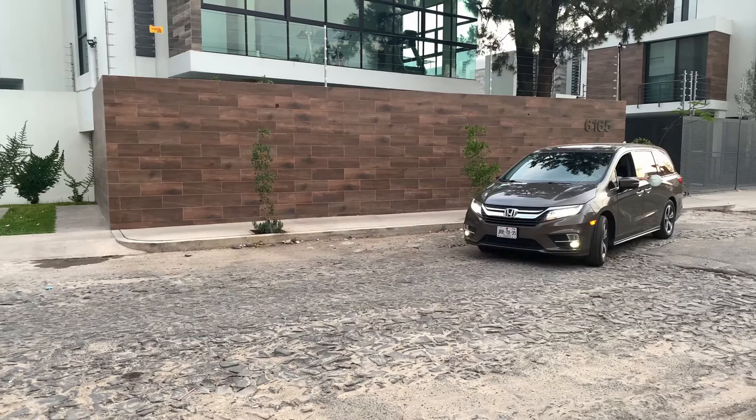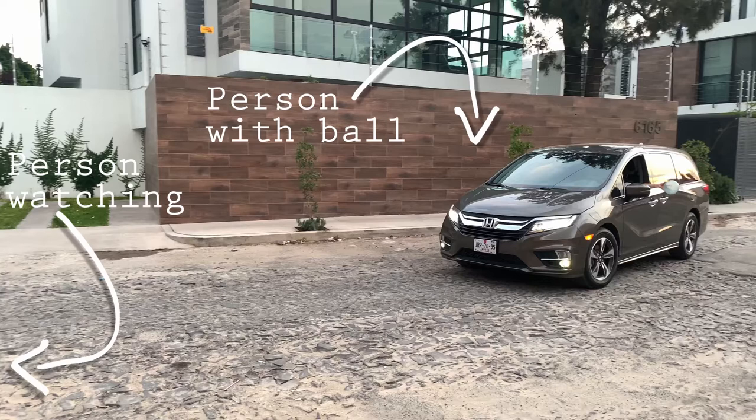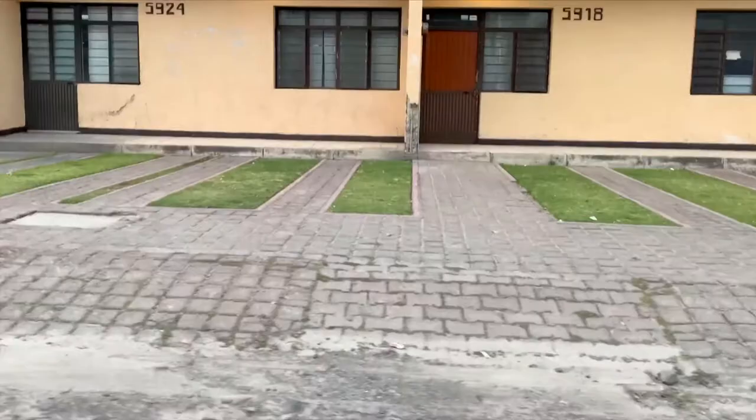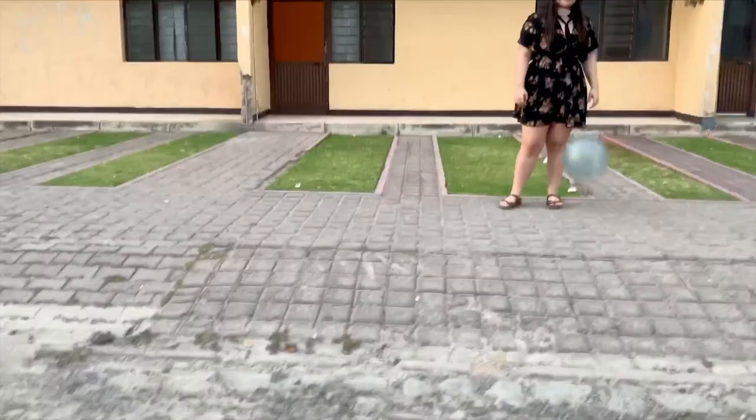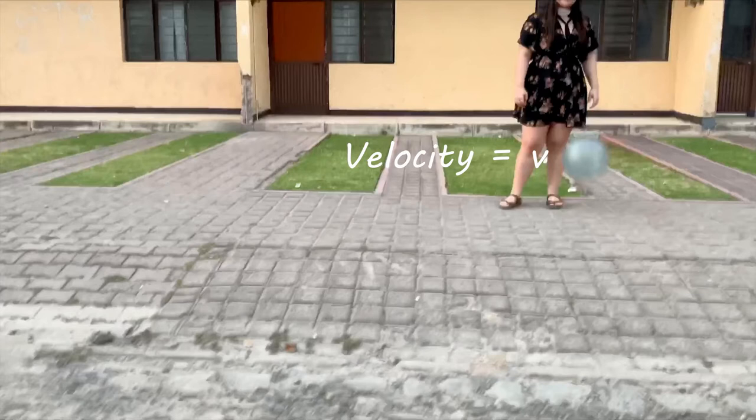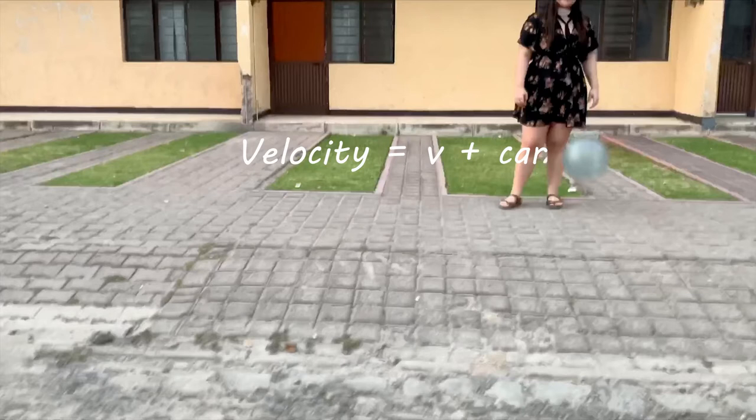Let's imagine we have a car, a ball and two persons. One person is inside the car with the ball and another one is outside watching the car. Now the person inside throws the ball. For the person inside, the ball will have the velocity that he threw. But then, the person that is outside will perceive the speed of the car plus the speed of the ball.